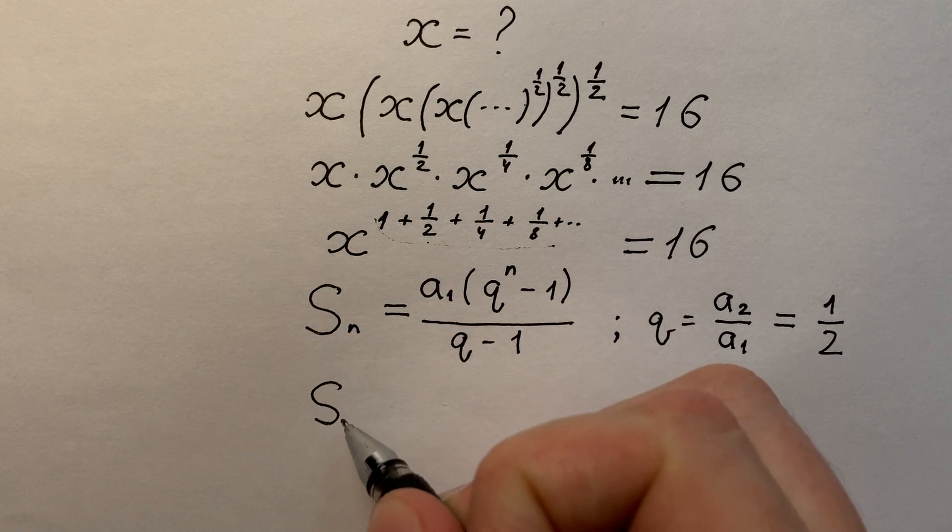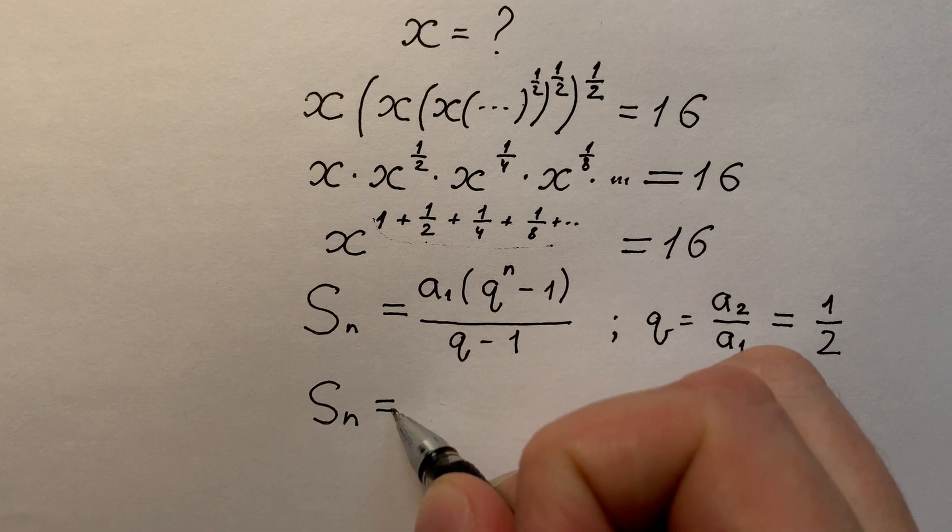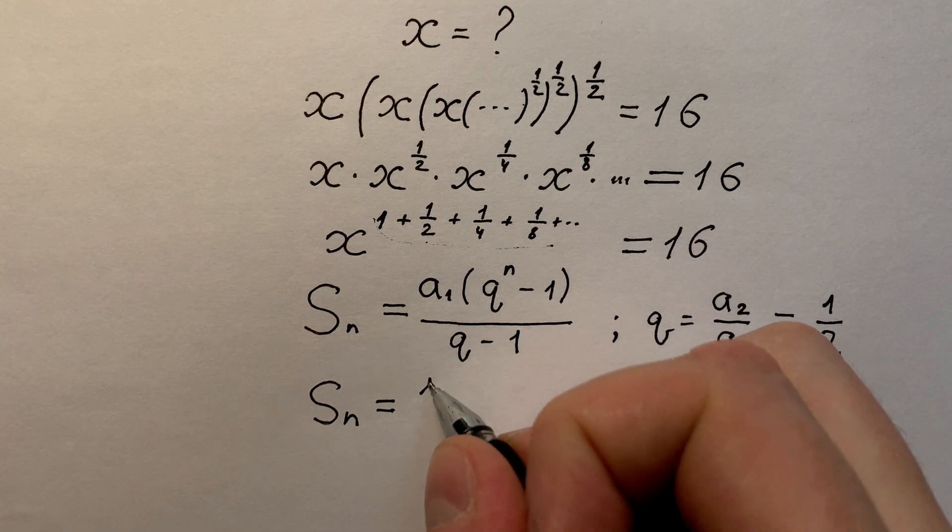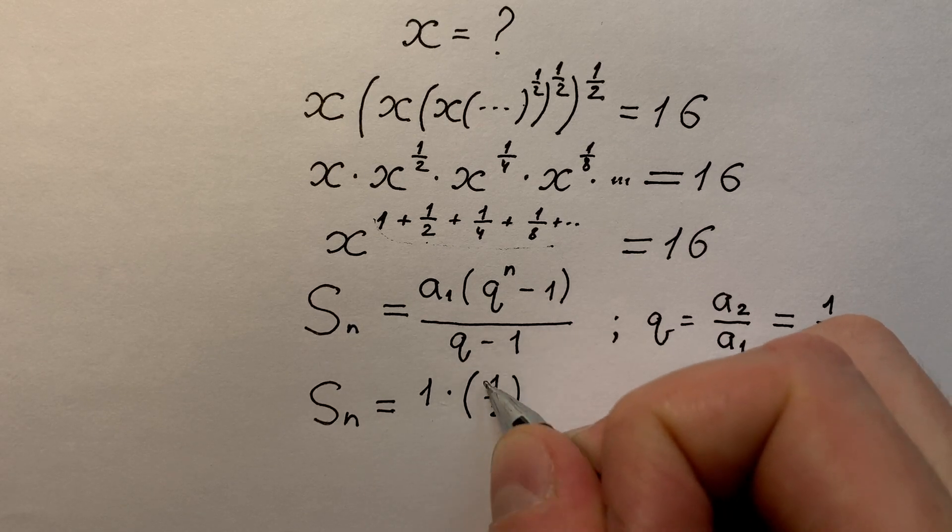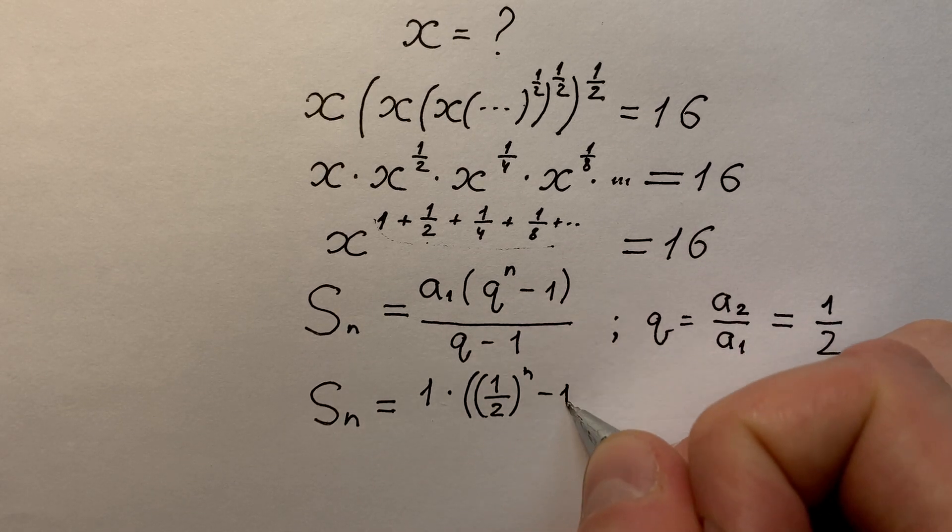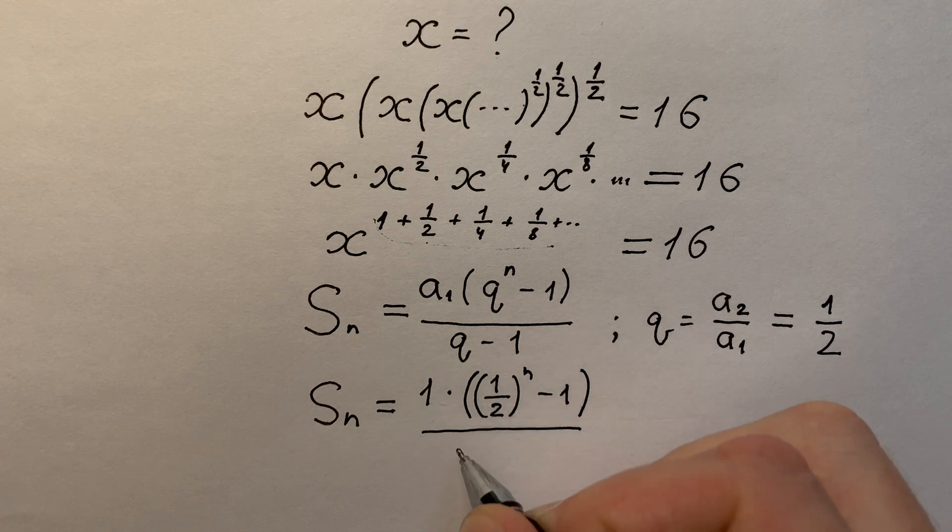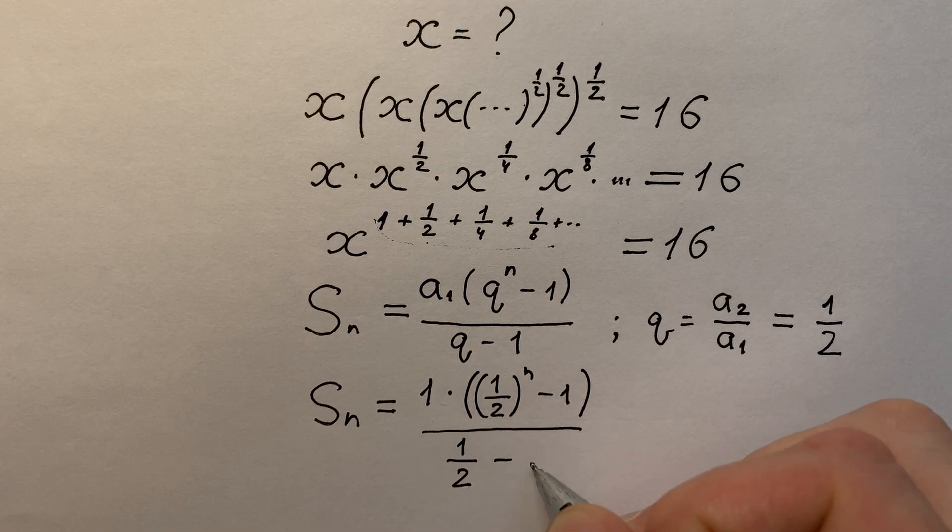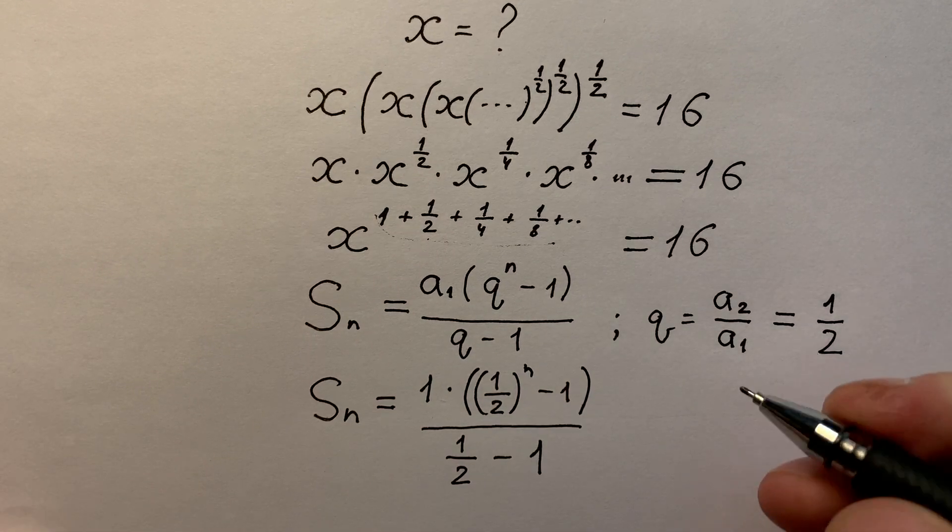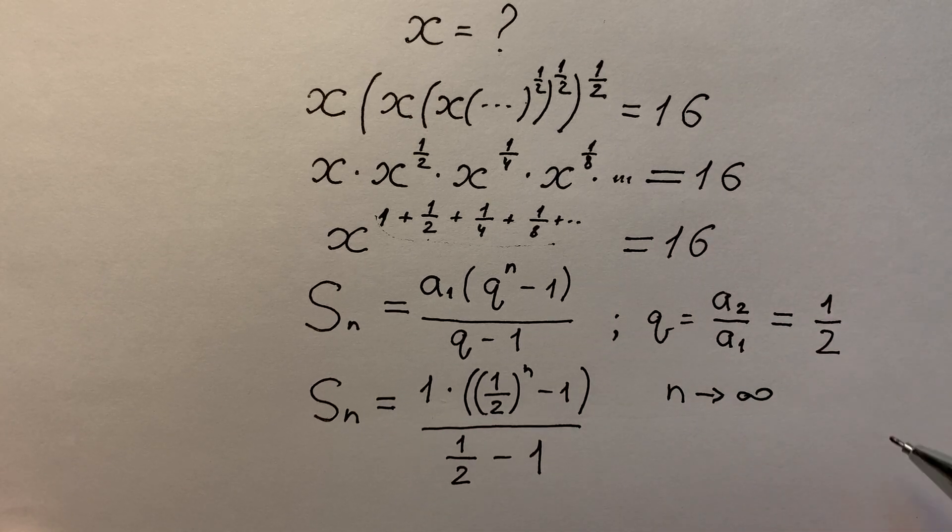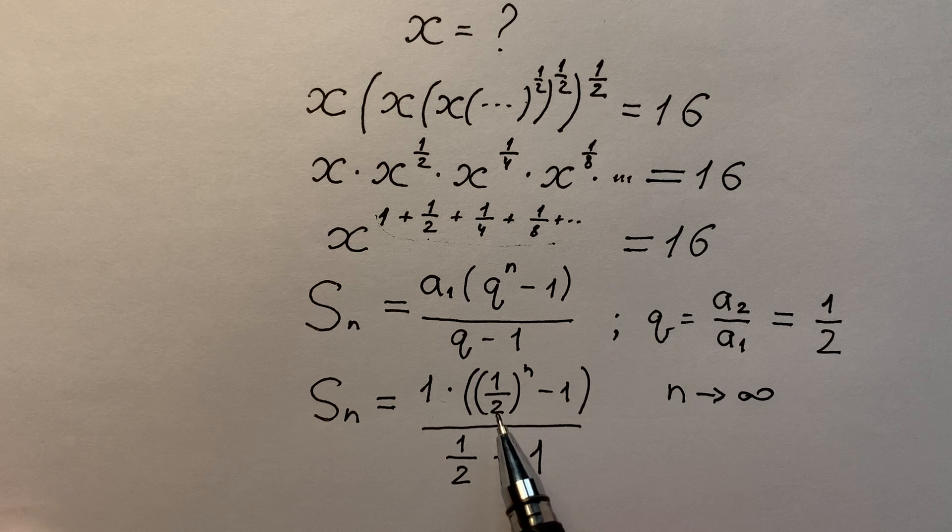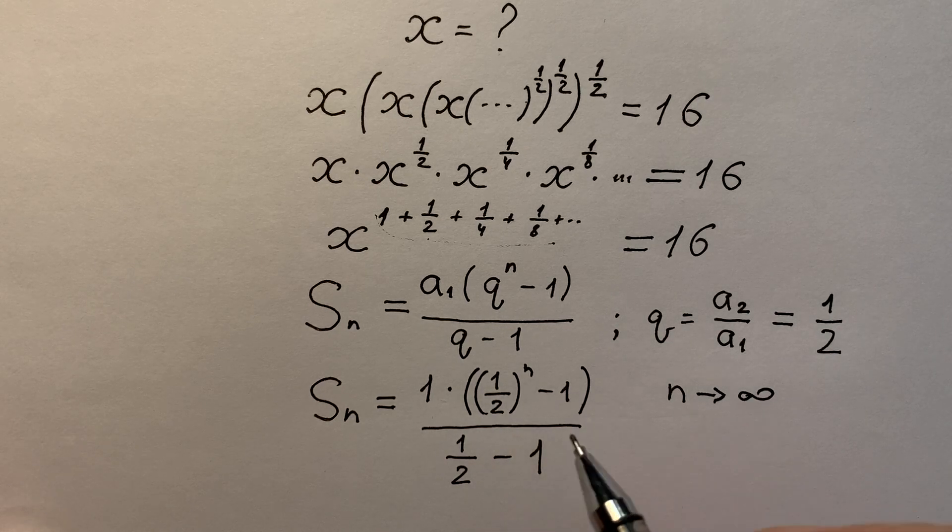So we can find that sum of infinitely decreasing geometric progression equals to 1 times (1/2)ⁿ minus 1 divided by 1/2 minus 1. As we know that n goes to infinity, (1/2)ⁿ goes to 0.